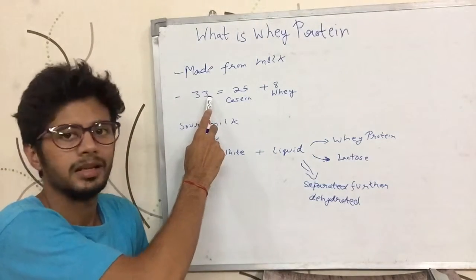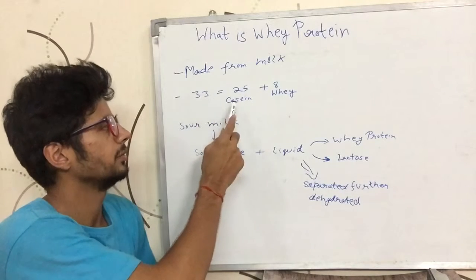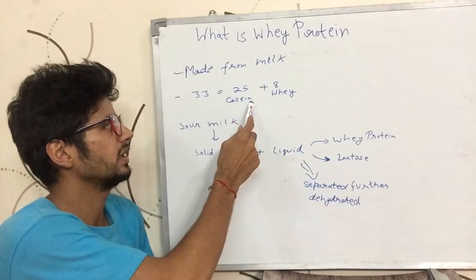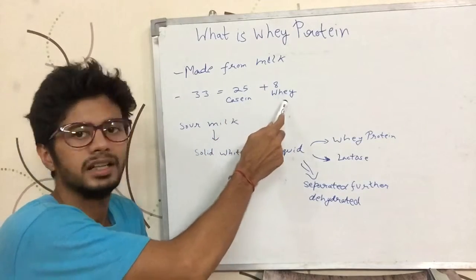One liter of milk has 33 grams of protein approximately, out of which about 25 grams is casein protein and 8 grams is whey protein.